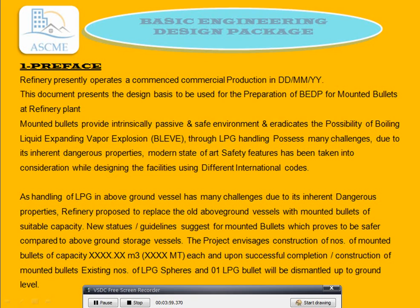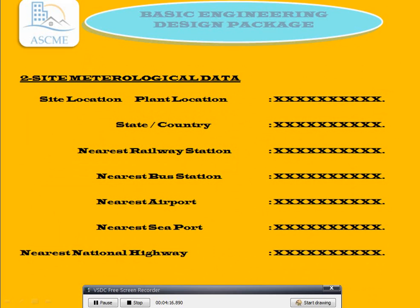The construction involves a number of mounded bullets of suitable capacity — specified in cubic meters and metric tons. Upon successful completion, the construction consists of a number of LPG spares, and one existing LPG bullet will be dismantled down to ground level.